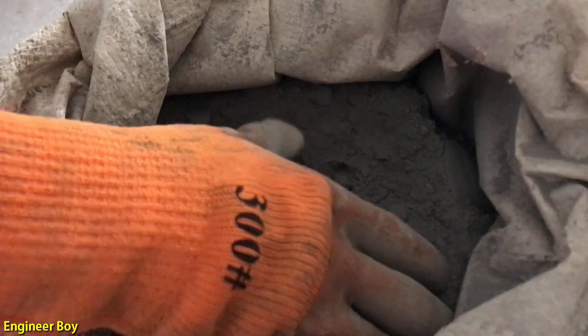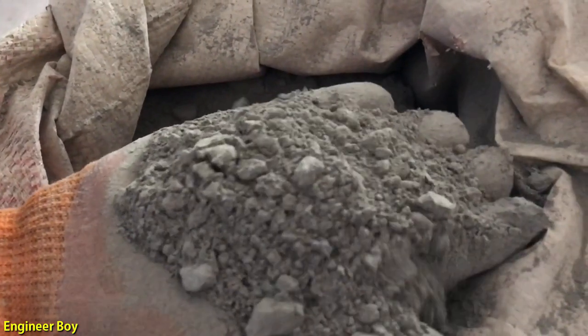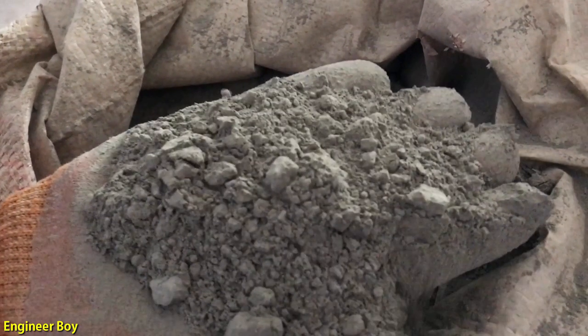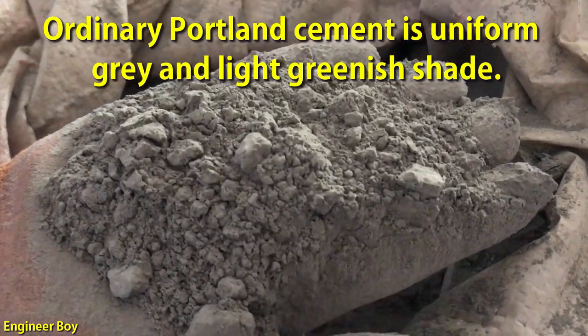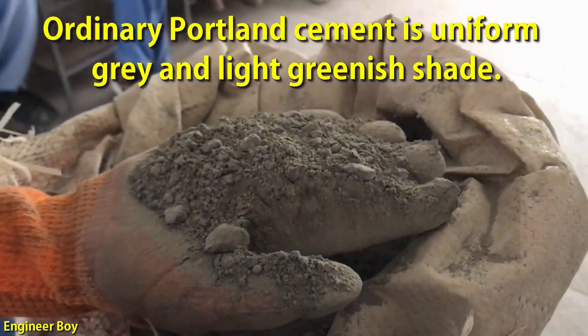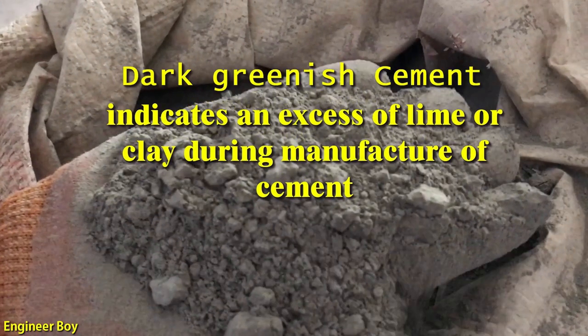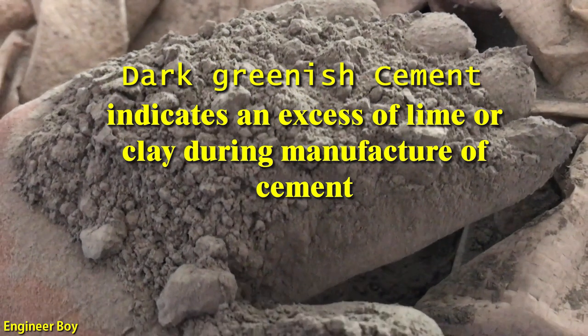Number two, and that's the color test. The color of cement can be a good indicator of its quality and composition. A good cement should be a uniform gray color with a light greenish shade. If the color of cement is dark greenish, it may indicate an excess of lime or clay during the manufacture of cement.